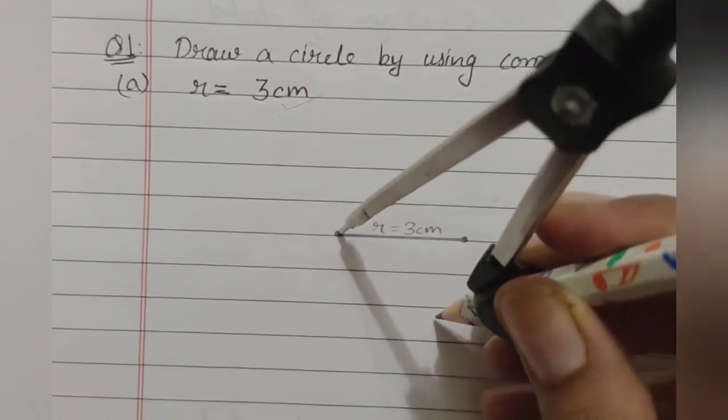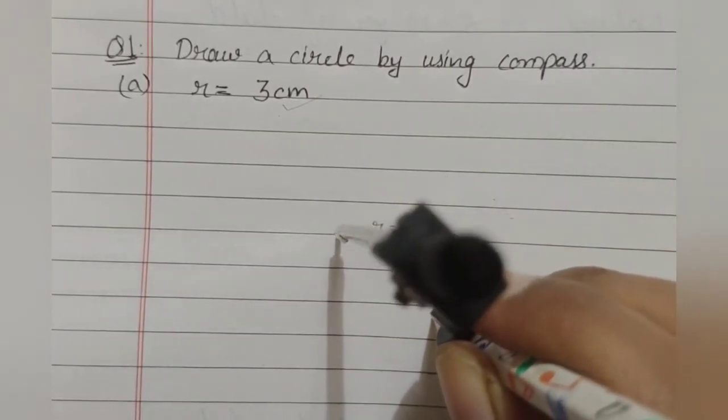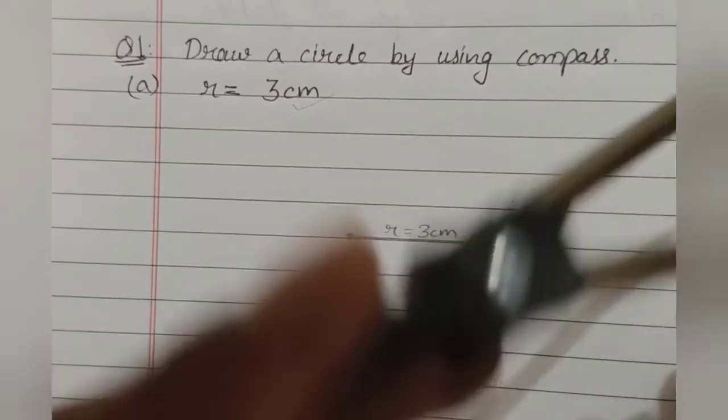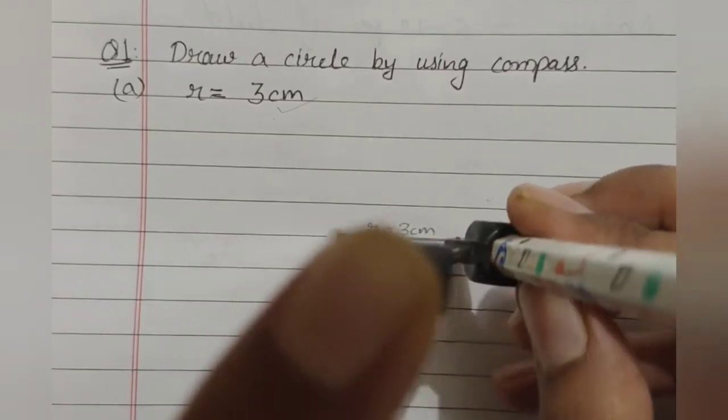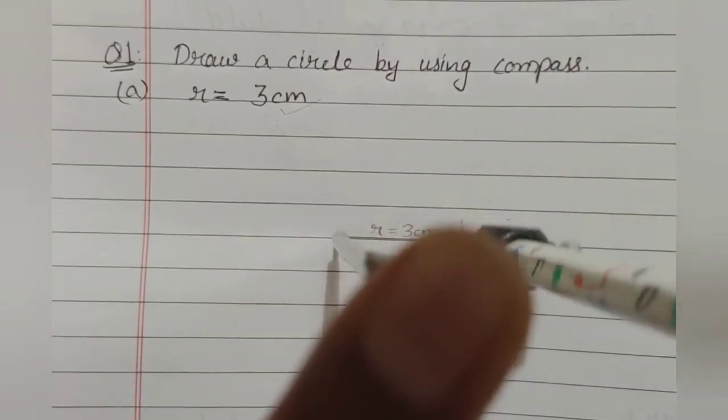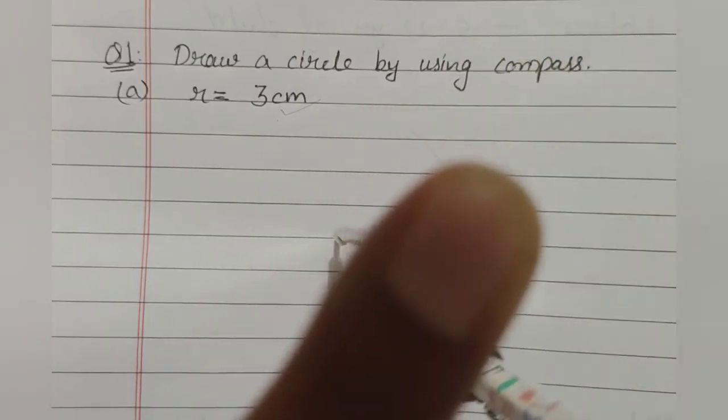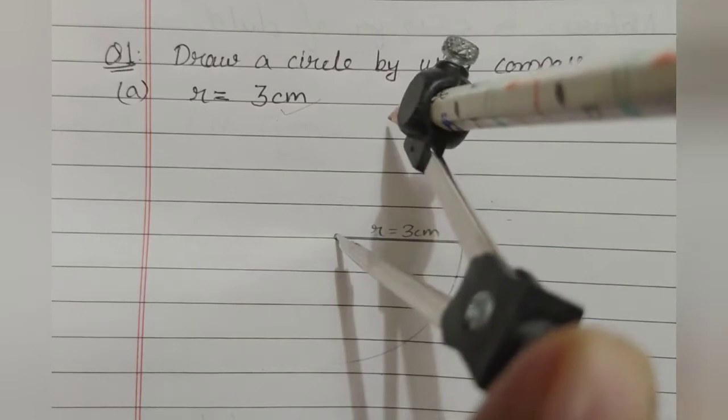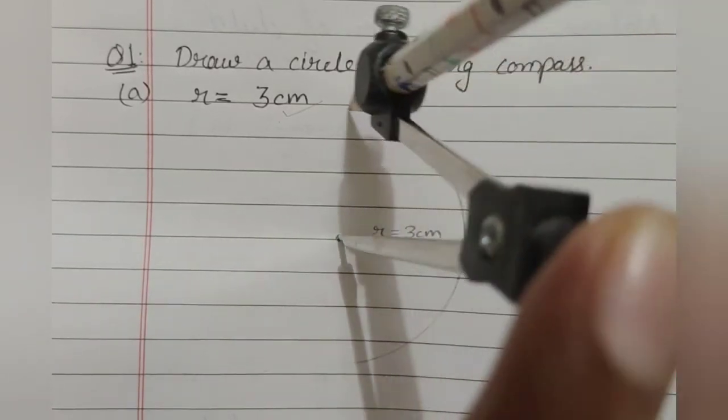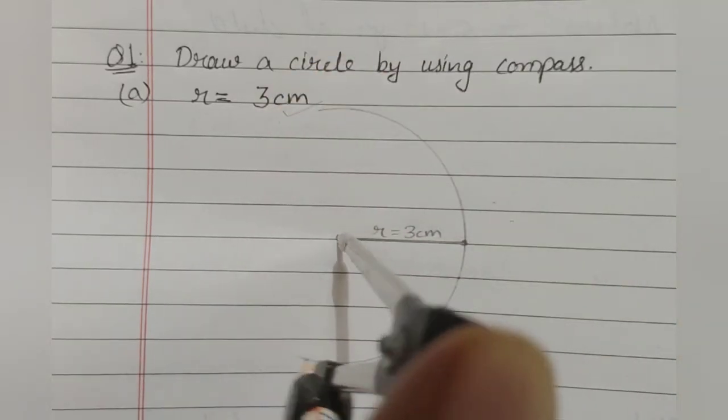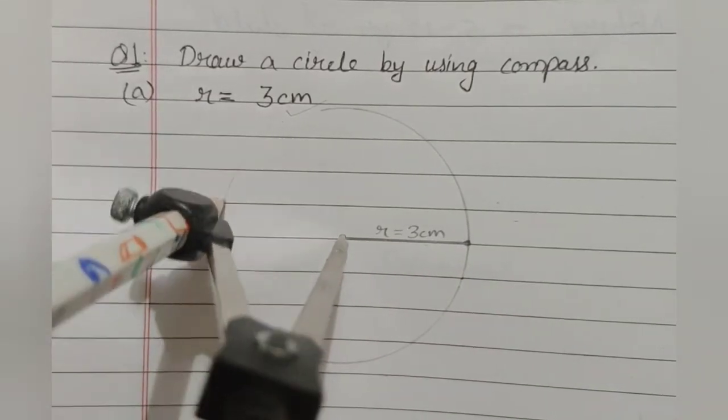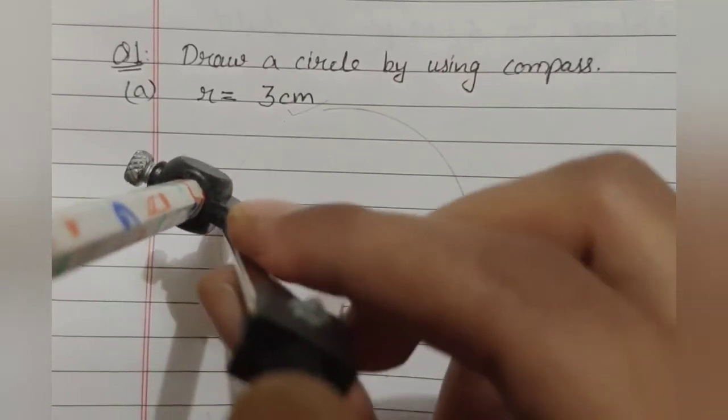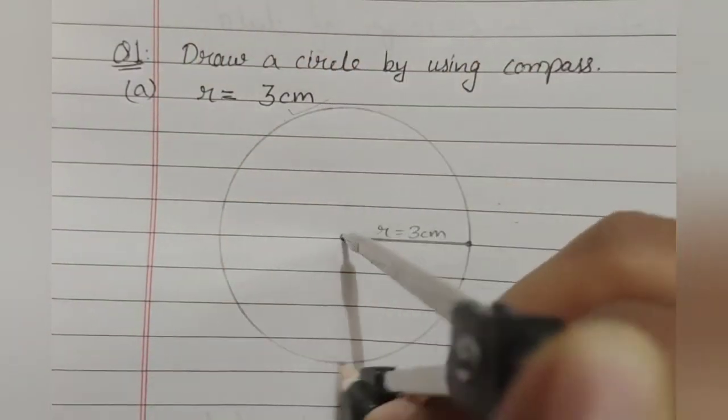Now, put your compass here like this and hold it from the hinge. This part. So, put this metallic nib on the center and then hold it like this and then with the help of pencil. Move your pencil to make a circle. See how to do it? I guess I have to use smaller pencil. Yes. Done. See? This is how you will make a circle.